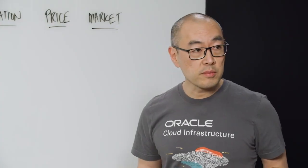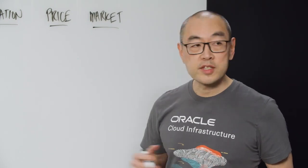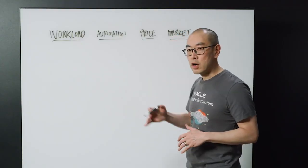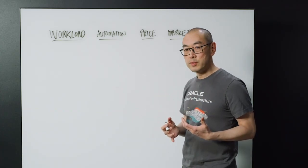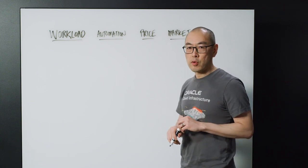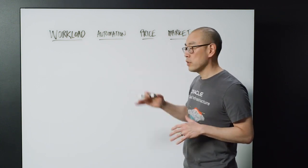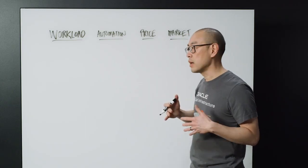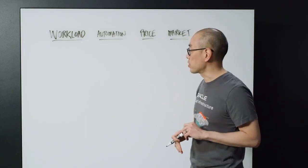As a former head of product myself for a startup, I went through some of the same considerations that you're going through today. So four areas to think about are the kind of workload that you're going to be building in the cloud. Second is how much automation you require out of your cloud. Third is the price point that you're looking for. And fourth is the kind of market you're trying to get into with your application or your startup.